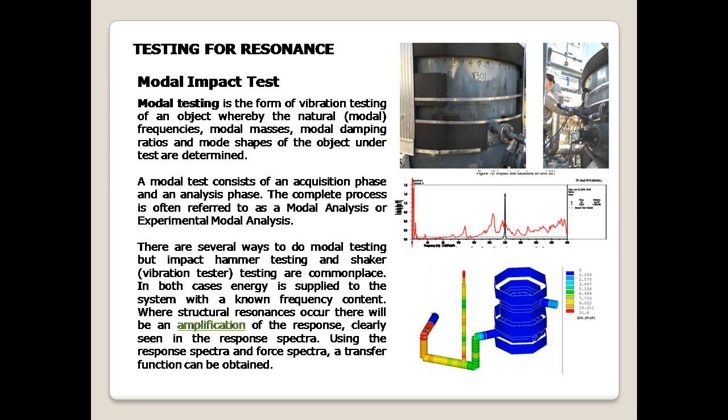Modal Impact Testing is a form of vibration testing whereby the natural (modal) frequencies, modal masses, modal damping ratios, and mode shapes of the object under test are determined. A modal test consists of an acquisition phase and an analysis phase — the complete process is often referred to as experimental modal analysis. There are several ways to do modal testing, but impact hammer testing and shaker (vibration tester) testing are commonplace. In both cases, energy is supplied to the system with a known frequency content. Where structural resonances occur, there will be an amplification of the response clearly seen in the response spectra. Using the response spectra and force spectra, a transfer function can be obtained.